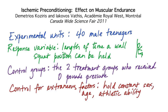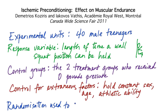Although this wasn't done, another way they could have controlled for extraneous factors was to use blocking — for example, enrolling both athletes and non-athletes and assigning the four treatments to subjects within each athletic group. Another principle of experimental design is randomization, and the 40 experimental units were randomly assigned to which of the four treatments they received.